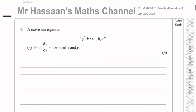This question is all about differentiation and a special type called implicit differentiation. We need to find dy/dx in terms of x and y. We could attempt to make y the subject of the formula and find dy/dx in the normal traditional way. However, as we have a y-squared term and a y term, it's going to be difficult to do that — maybe not impossible, but difficult.